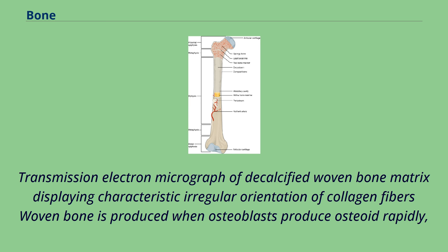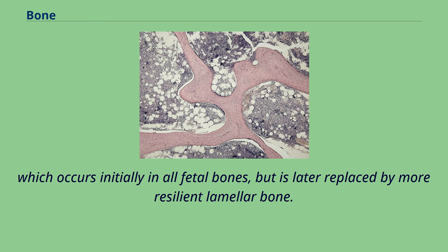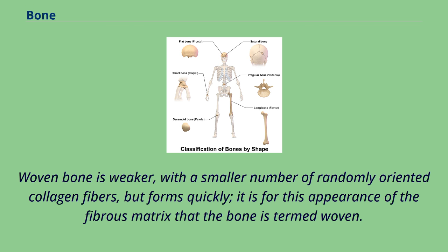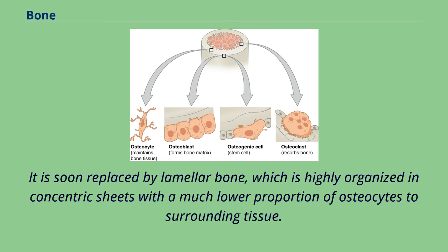Woven bone is produced when osteoblasts produce osteoid rapidly, which occurs initially in all fetal bones but is later replaced by more resilient lamellar bone. In adults, woven bone is created after fractures or in Paget's disease. Woven bone is weaker, with a smaller number of randomly oriented collagen fibers, but forms quickly. It is soon replaced by lamellar bone, which is highly organized in concentric sheets with a much lower proportion of osteocytes to surrounding tissue.